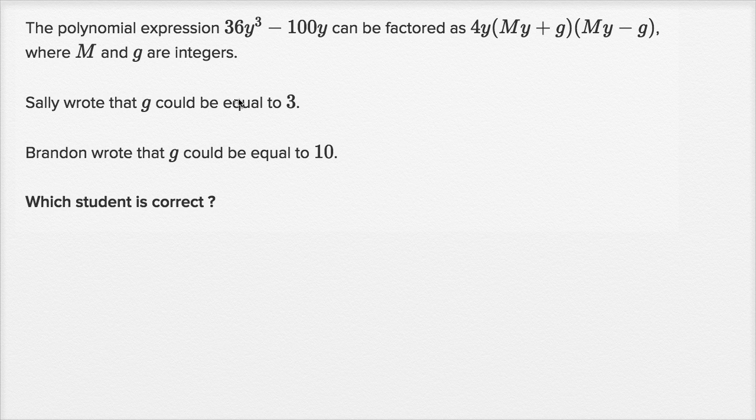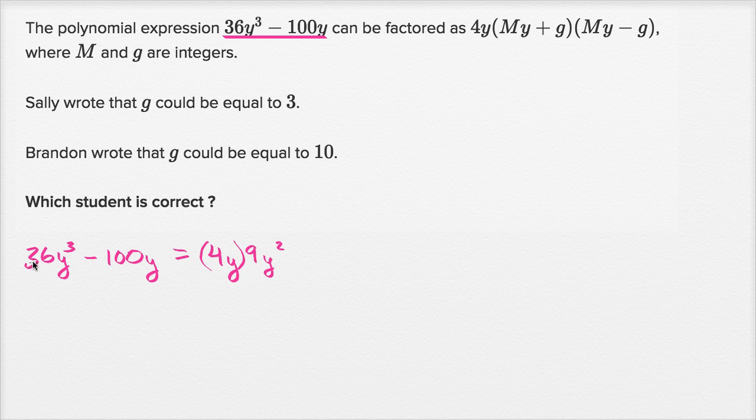Now let's work through this together. If we look at this expression and we want to factor out a 4y, 36y³ - 100y is the same thing as 36y³ being 4y times 9y², right? Because 4 times 9 is 36, and y times y² is y³. So all I did to get the 9y² is I divided 36 by 4 to get the 9, and I divided y³ by the y to get y². So if you factor out a 4y, you're left with 9y² for that first term.